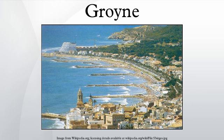A groin creates and maintains a wide area of beach or sediment on its updrift side, and reduces erosion on the other. It is a physical barrier to stop sediment transport in the direction of longshore drift. This causes a buildup, which is often accompanied by accelerated erosion of the down-drift beach, which receives little or no sand from longshore drift.